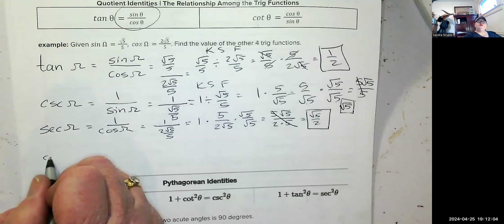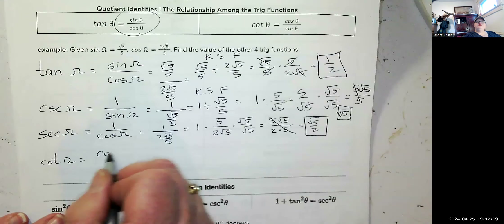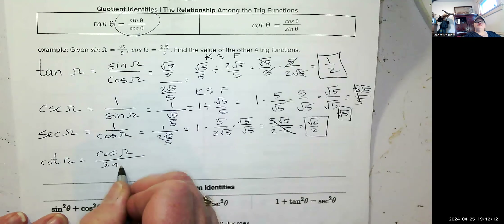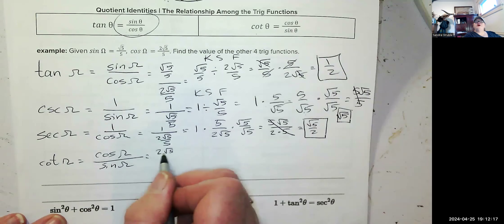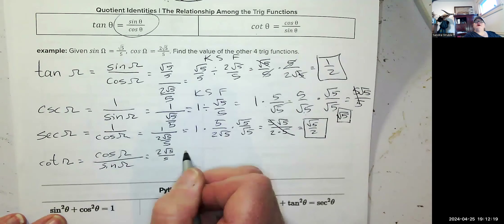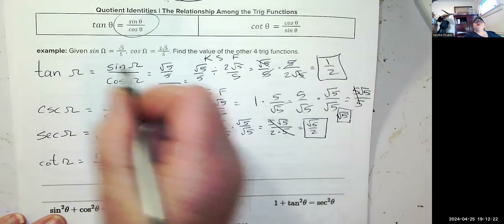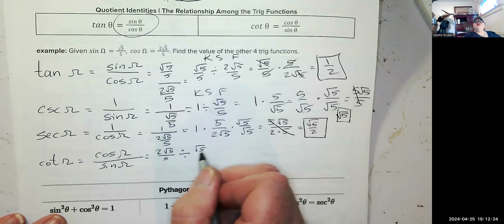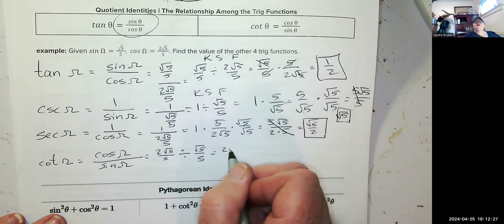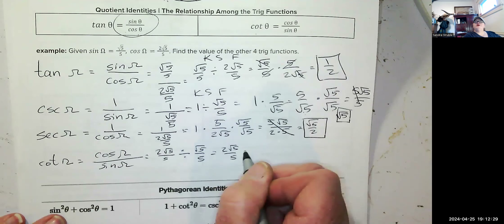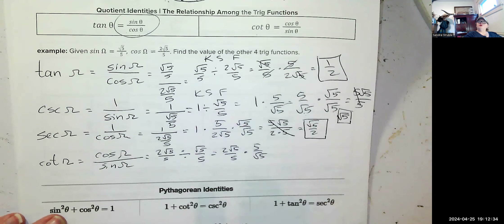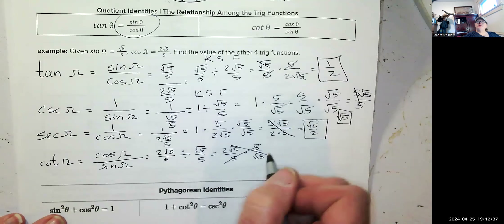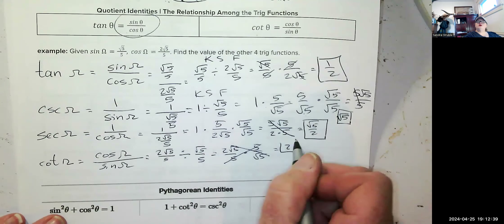The last one is cotangent, which is cosine over sine: (2√5/5) divided by (√5/5). Keep-switch-flip and reduce — the fives cancel, the √5 terms cancel — and we're left with 2.